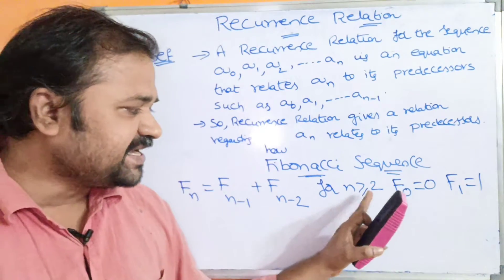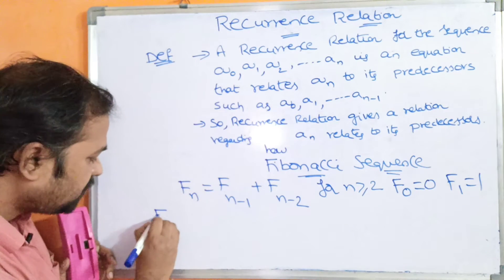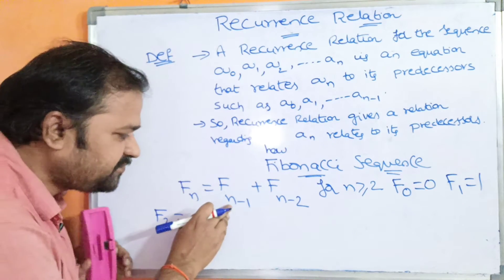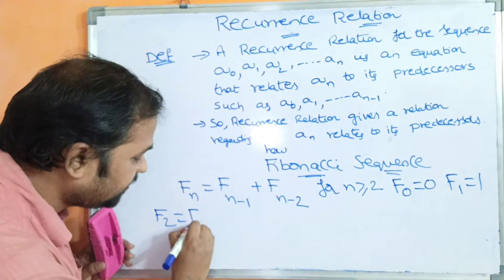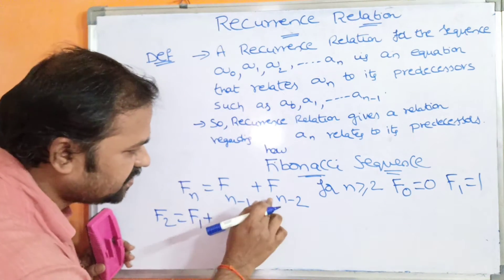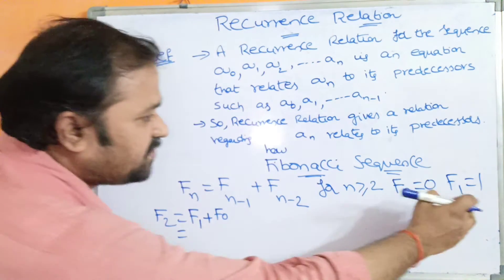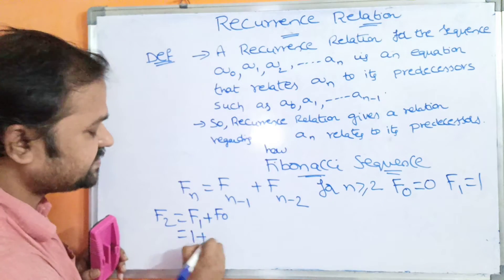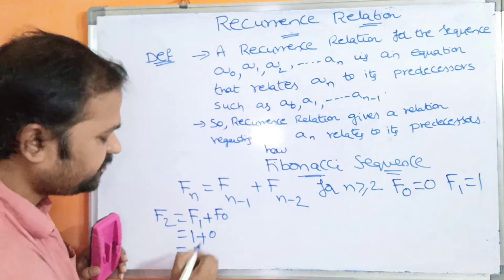The condition is n greater than or equal to 2, so let us find F2. Substituting 2 in place of n: F2 = F(2-1) + F(2-2) = F1 + F0. F1 is 1 and F0 is 0, so 1 + 0 = 1.